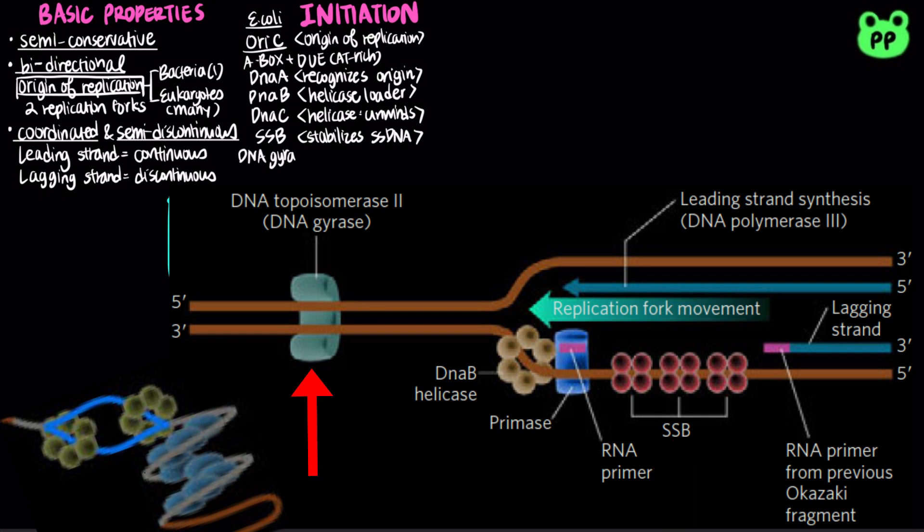DNA gyrase or DNA topoisomerase 2 relieve the torsional strain induced ahead of replication fork by the unwinding reaction. Several other proteins, HU, FIS, and IHF, also bind DNA to stimulate initiation.